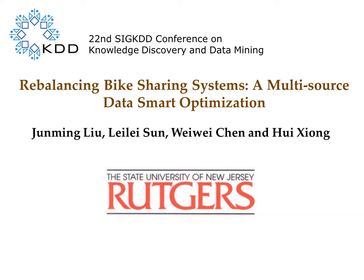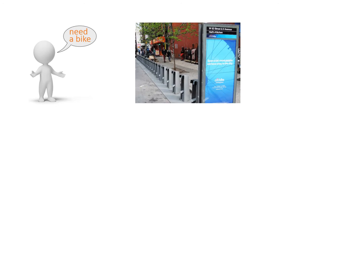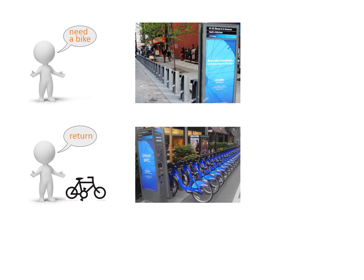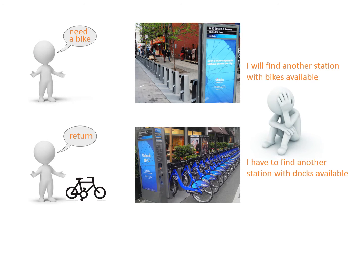Hello everyone. This is a short video for our paper on rebalancing bike sharing systems. Imagine that you are looking for a bike but the station is empty, or you want to return a bike but the station is full. You will have to find another station with available bikes or docks.